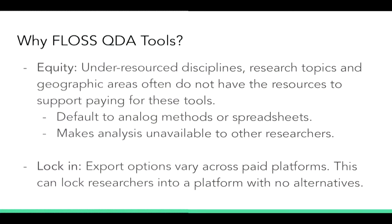So why FLOSS? The first reason is equity. These are under-resourced disciplines, mostly in social science and the humanities, that do not get as much money from funders, and this spans lots of geographic areas that also typically do not have the resources to pay for tools. This makes the default these hacky systems, or people just stay analog — they print out all of their transcripts, highlight with different colored markers, or put post-it notes — which makes the analysis unavailable to other researchers when we think about openness and reproducibility. This is also not sustainable, and part of that instability is around lock-in. The export options in these paid platforms really vary, they're not backwards compatible, so you can lock students and researchers into a platform with no alternatives, and when you leave a university or a well-resourced job, you have nowhere to go for your computer-assisted qualitative data analysis.